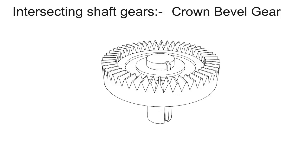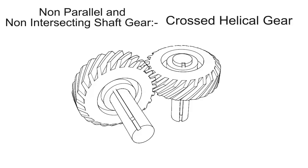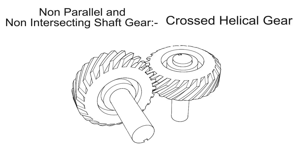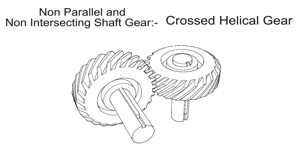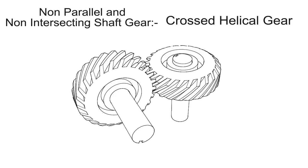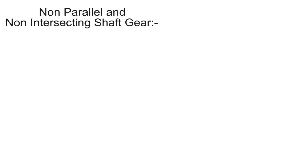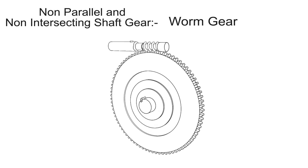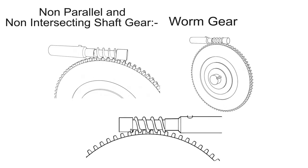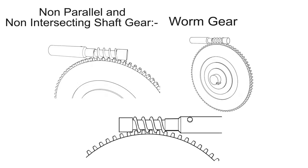Non-parallel and non-intersecting shaft gears. First one is crossed helical gear. These gears are used to drive feed mechanisms on machine tools, cam shafts, and oil pumps on small IC engines. Worm gear — the shafts may have any angle between them, but normally it is 90 degrees. The worm drives the gear primarily with sliding motion, thus there are high friction losses with worm gears.